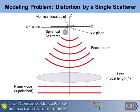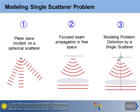For this lecture, I decided to define this problem — our modeling problem. We have a single spherical scatterer, and the focused beam is propagating toward the focus. We want to know the distortion in the XY plane and XZ plane, defined at the nominal focal point. First, since this is a spherical scatterer, we are going to look at plane wave incident on a spherical scatterer. Then we will look at focused beam propagation in free space and the analytical solution. Once we have that information, we will combine it and look at how we can solve our problem.